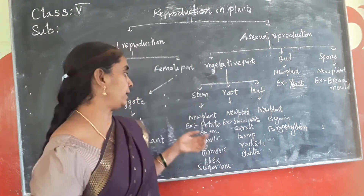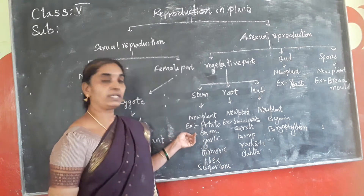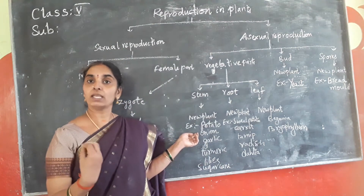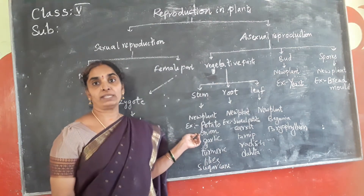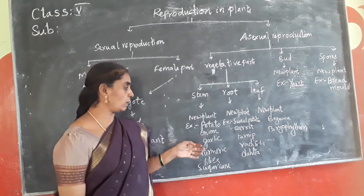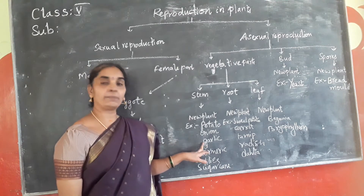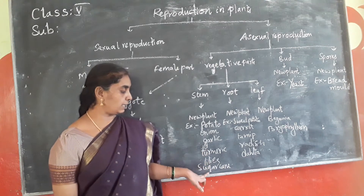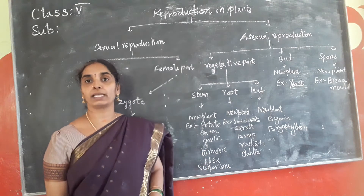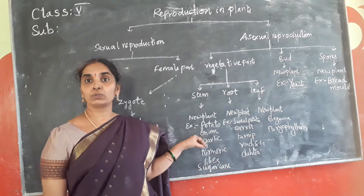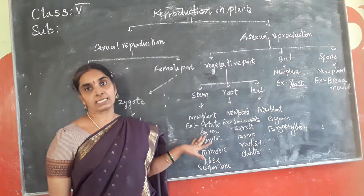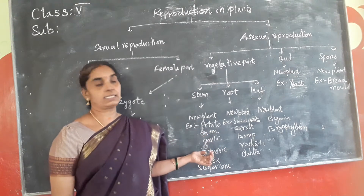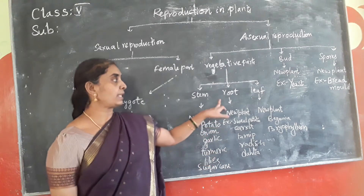In a similar manner, onion — the bulb of onions — gives rise to a new plant when sown in the soil. Similarly, garlic, turmeric, lily, and sugar cane also give rise to new plants through their stems.